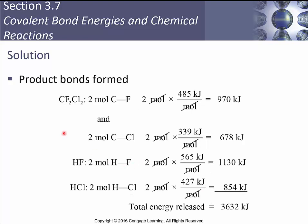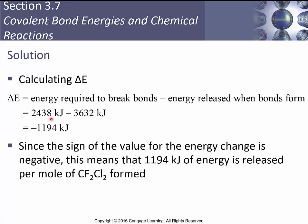Forming product bonds: in CF₂Cl₂, we get 2 moles of C-F bonds — 2 × 485 = 970 kJ; and 2 moles of C-Cl bonds — 2 × 339 = 678 kJ. We form 2 moles of H-F bonds — 2 × 565 = 1130 kJ; and 2 moles of H-Cl bonds — 2 × 427 = 854 kJ. Total energy released forming bonds: 3632 kJ. Therefore: ΔE = 2438 − 3632 = −1194 kJ. This is a very exothermic process.